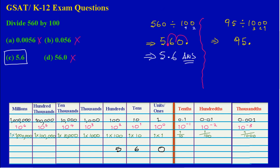We hop three times to the left: hop one, hop two, hop three. Since we hopped a third time past the digits, we place a zero to fill that place. Our answer is 0.095. When dividing by powers of 10, move to the left, and the number of zeros tells you how many times to hop.